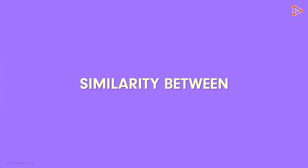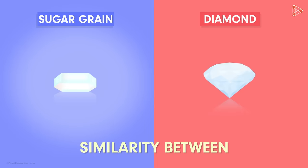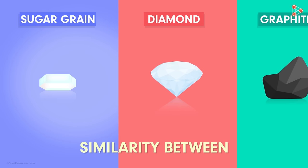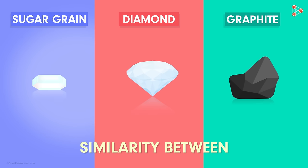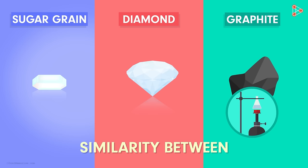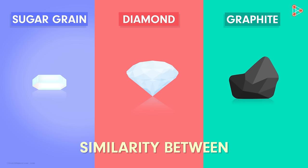If I ask you, what is the similarity between a sugar grain and a diamond? Maybe you'll say that they both are lustrous. And what if I ask you the similarity between a diamond and a graphite? Graphite is just a piece of black stone used in laboratories. Maybe you'll think there is no similarity. Is there really no similarity between these two? The answer would surprise you.